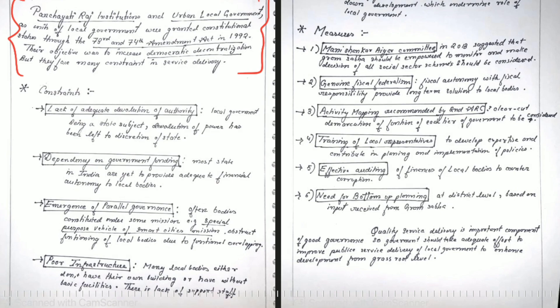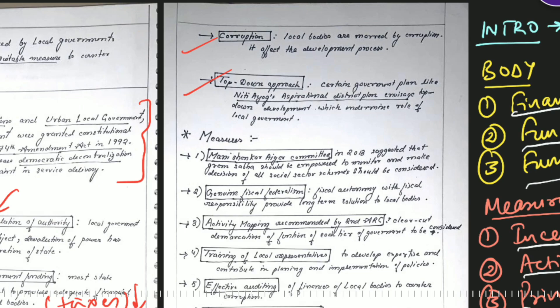These constraints are written well, though one or two points are missed. First point written is lack of adequate devolution of authority - writing in broad context is good. Dependence on government funding - here if you use the keyword taxes, like revenue from taxes is low, it would be better. Emergence of parallel governments refers to special purpose vehicles. Then poor infrastructure, corruption, top-down approach. You could add poor administration, inefficiency, inadequate strength.